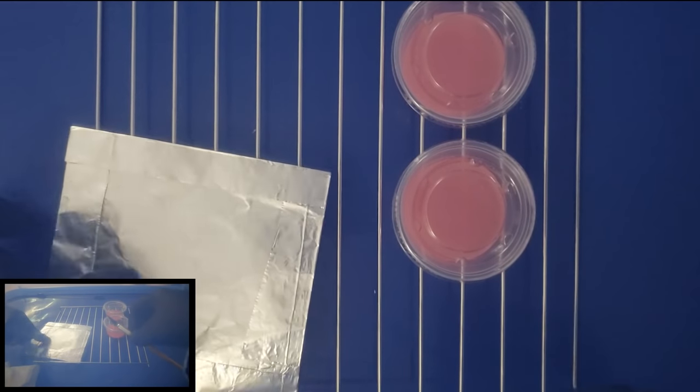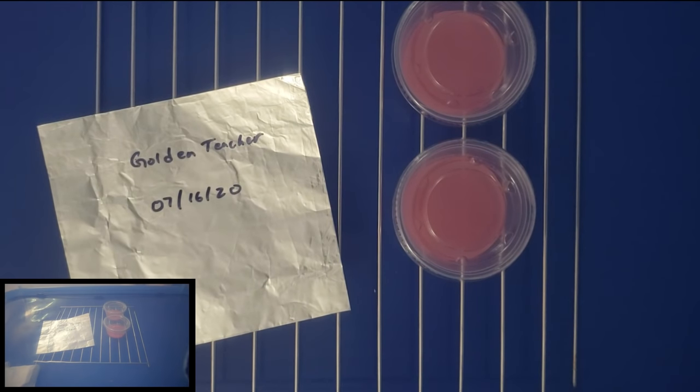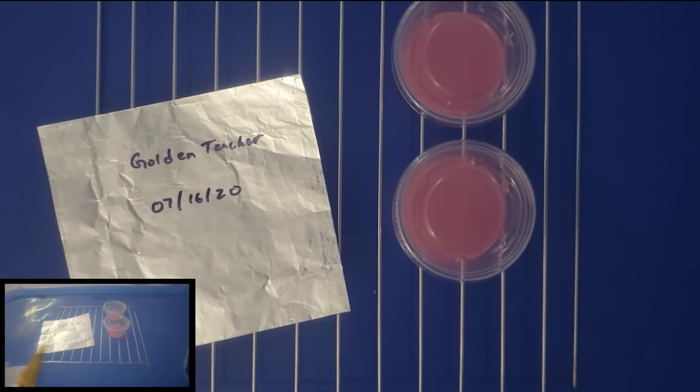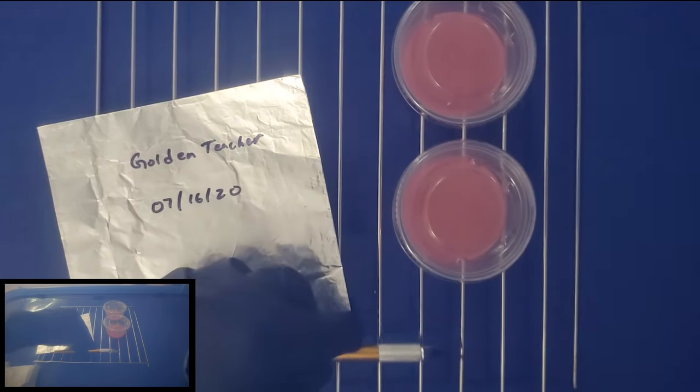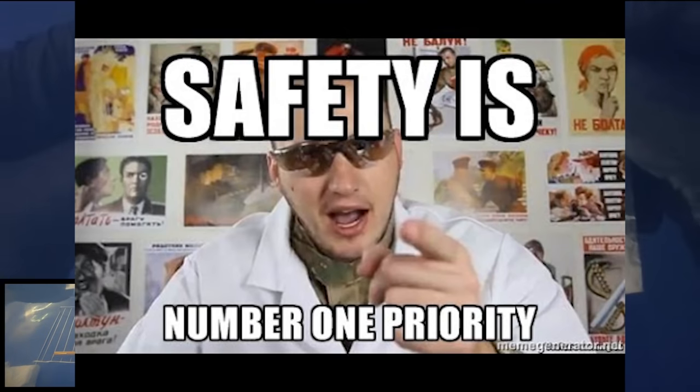Alright, the next step here, we're going to go ahead and flame sterilize our blade. This will ensure that we kill any type of bacteria or contamination. I'll go ahead and heat this up until it turns red hot. I want to make sure to do this outside of the steel air box. If you have any alcohol fumes inside the box, you might end up igniting and burning some hair off your forearms. So please don't do that. Remember safety is our number one priority.